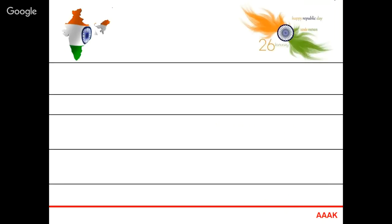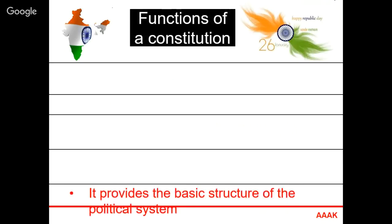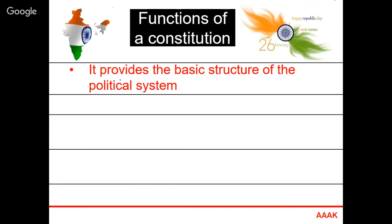The basic functions of the constitution: first and foremost, the constitution provides a basic structure of our political system. This includes the president as head of state, the prime minister, council of ministers, and an entire executive body. We have parliament and the legislature to pass laws, an executive to implement them, and a judiciary to interpret the laws. This entire system is provided by the constitution.